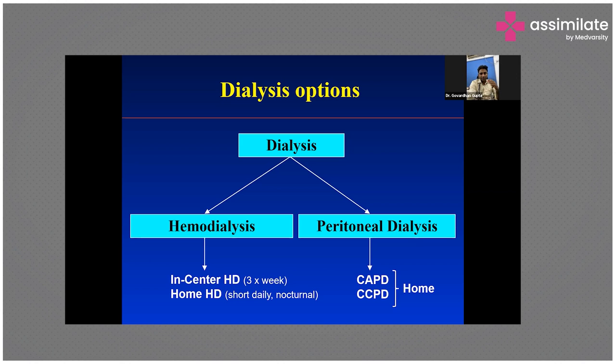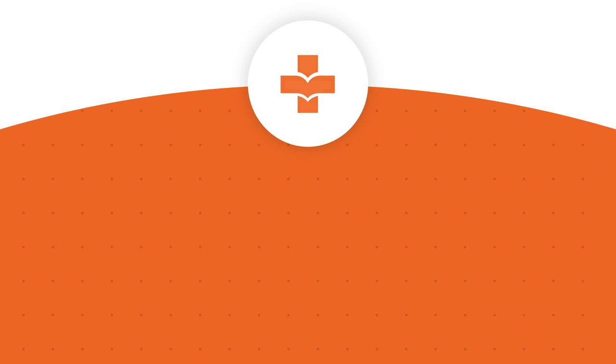In peritoneal dialysis, there are two options: CAPD and CCPD. The next slide will show the difference between APD and CCPD.